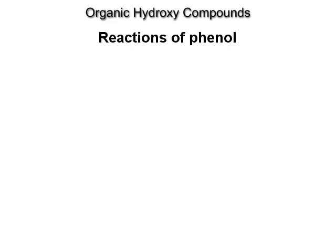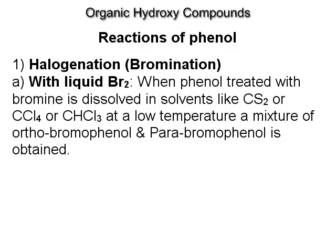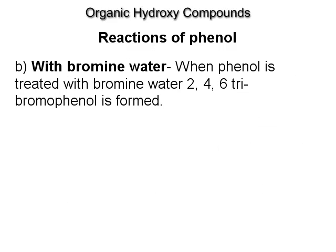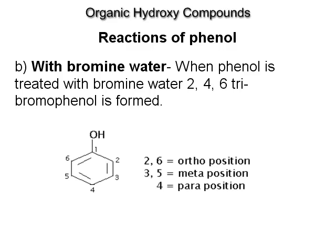Reactions of phenol. Halogenation — Bromination. With liquid bromine: when phenol is treated with bromine dissolved in solvents like CS2, CCl4, or CHCl3 at low temperature, a mixture of ortho-bromophenol and para-bromophenol is obtained. With bromine water: when phenol is treated with bromine water, 2,4,6-tribromophenol is obtained.